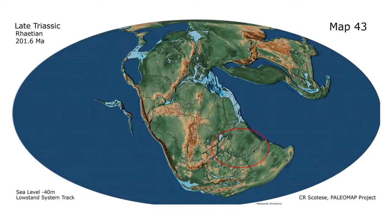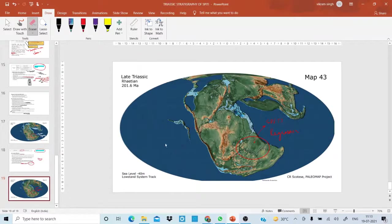In the late Triassic Rhaetian, the Tethys Sea had largely regressed, as shown by the paleogeographic map. By comparing the various paleogeographic maps throughout the Triassic, it becomes clear there were several episodes of transgression and regression, all in shallow marine settings. The deposition environment varied across Spiti Valley, as evident from the fossil record, lithology, and sedimentary structures. This completes the Triassic stratigraphy of the Spiti Valley.